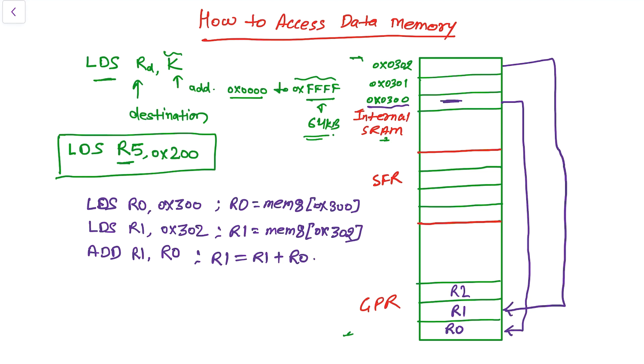This was about the LDS instruction. And the next instruction is STS. STS shows that, or says that, store direct to data space. And this STS instruction syntax is like this: we have here the K and then finally here we have Rr.